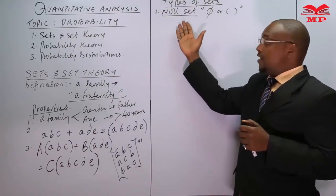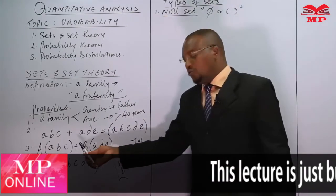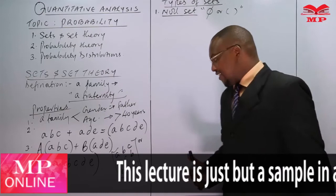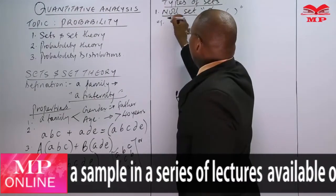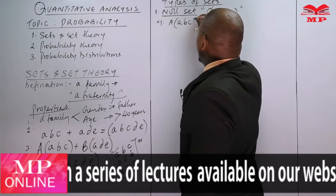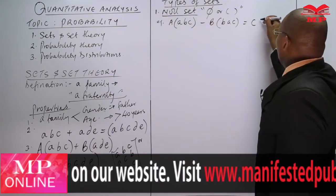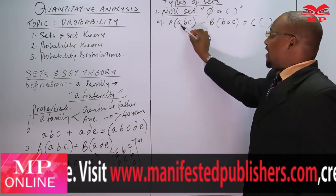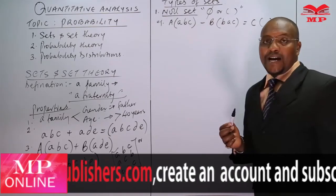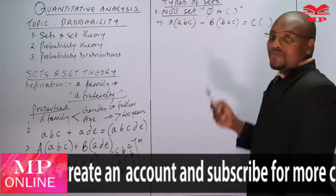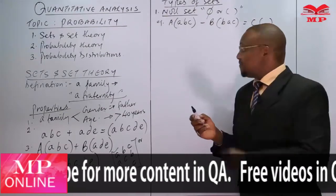A null set is a set with no elements, also called an empty set. We need to know and use null sets because sometimes when you subtract two sets that have the same elements, the result will be an empty set. For example, set A = {a, b, c} minus set B = {a, b, c}: element a cancels out, b cancels out, and c cancels out, leaving nothing — an empty set, which is the null set.